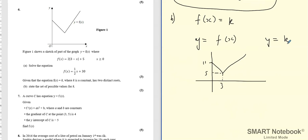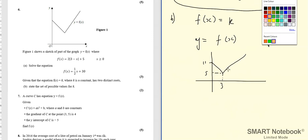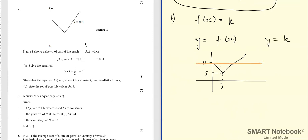And y equals k is going to be a horizontal line. Now we want to draw a horizontal line where there are going to be two solutions.